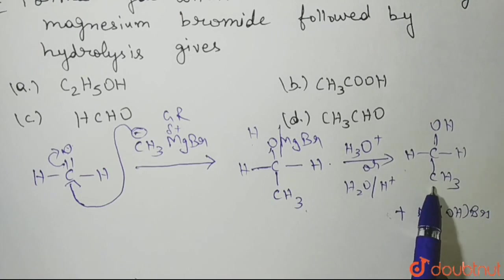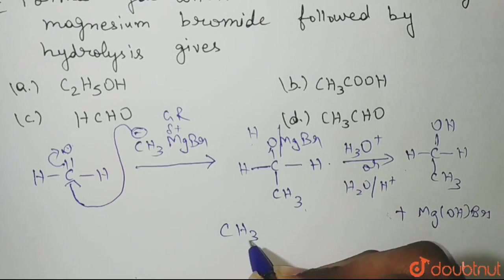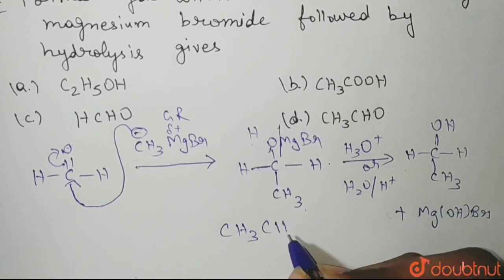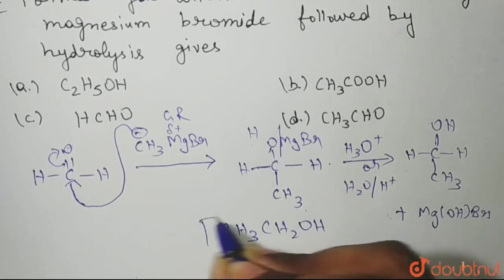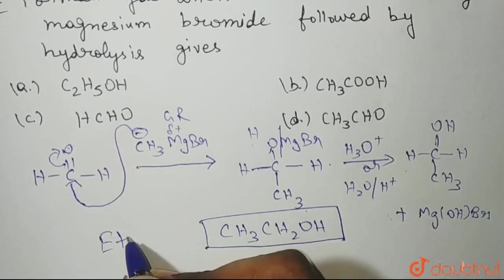And what is this? This is nothing but CH3CH2OH. So what is the product formed on hydrolysis? We got CH3CH2OH. And what is this? This is C2H5OH. This is nothing but ethanol.